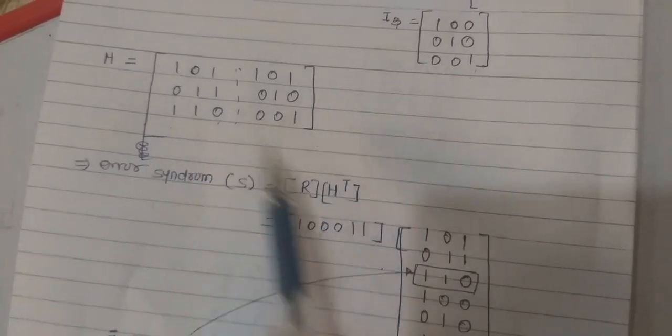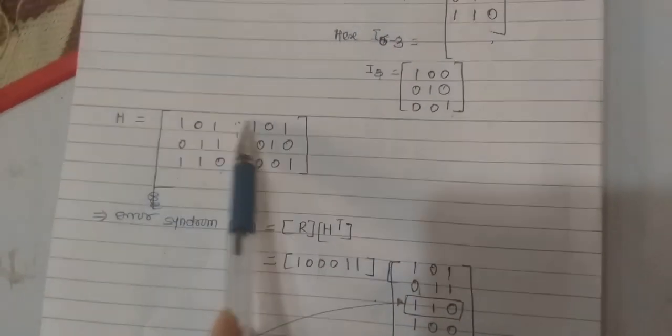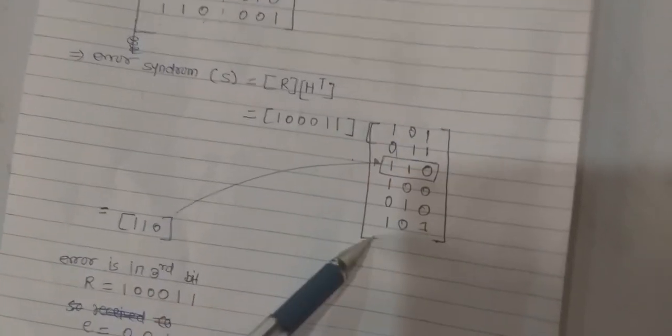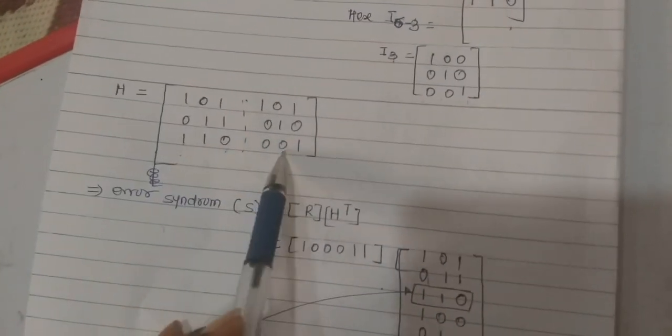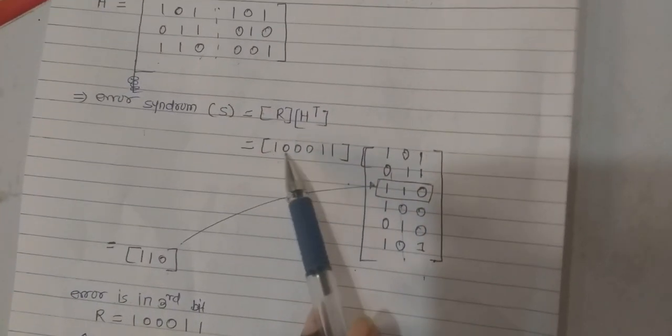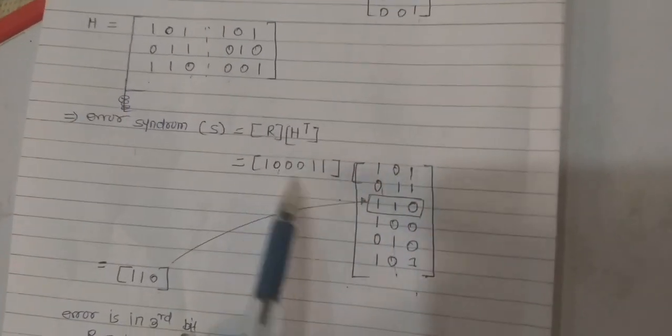That means this row will be converted to the respective column. First row is converted to first column, second row converted into second column, third row converted into third column. R is given in the problem: 100011. Multiply and add the modulo 2 addition.